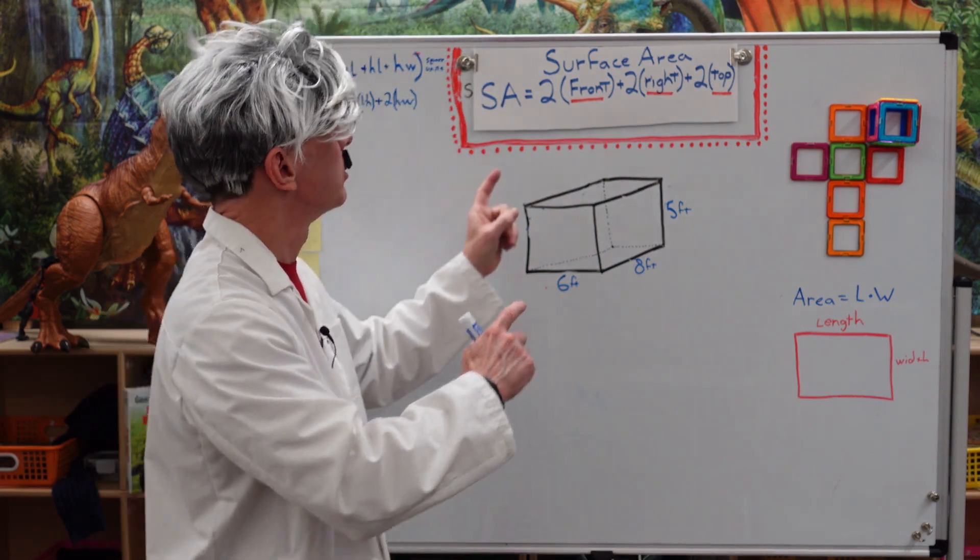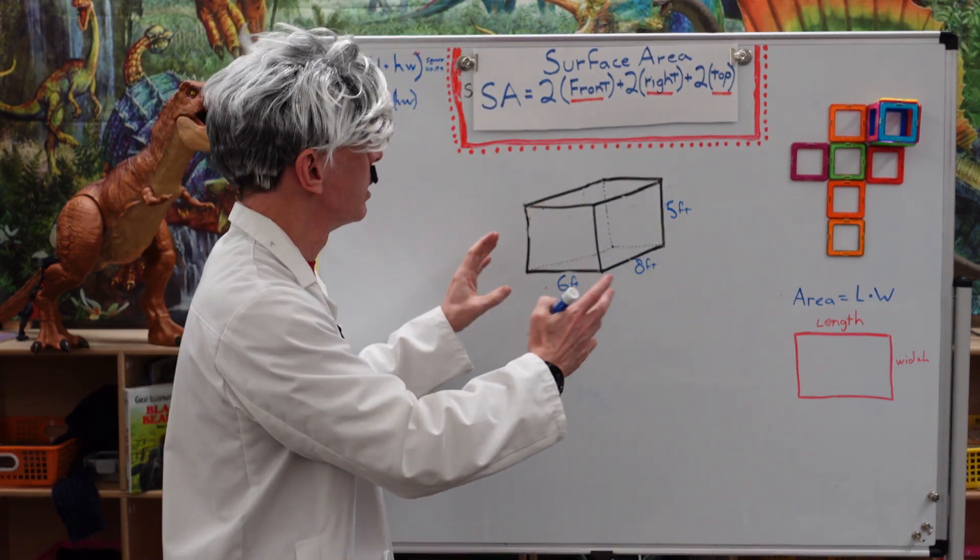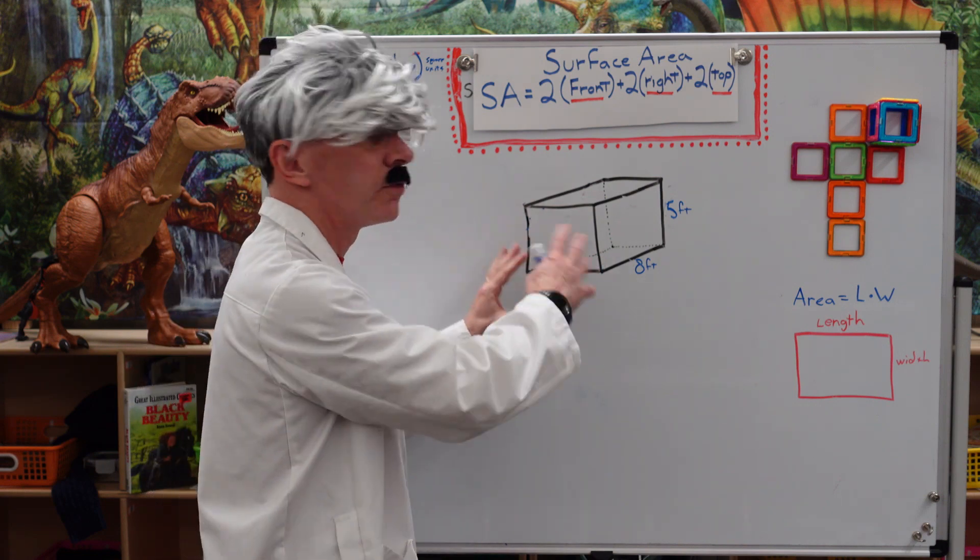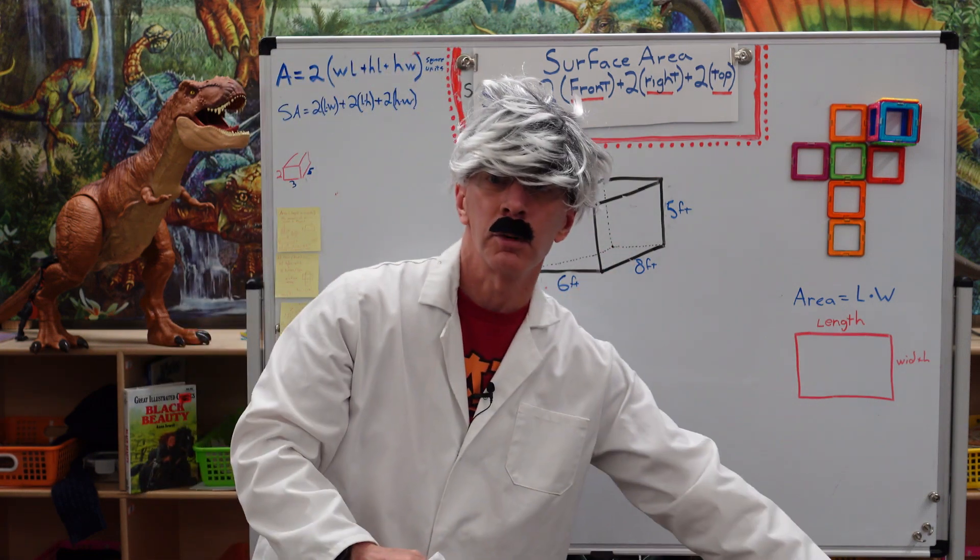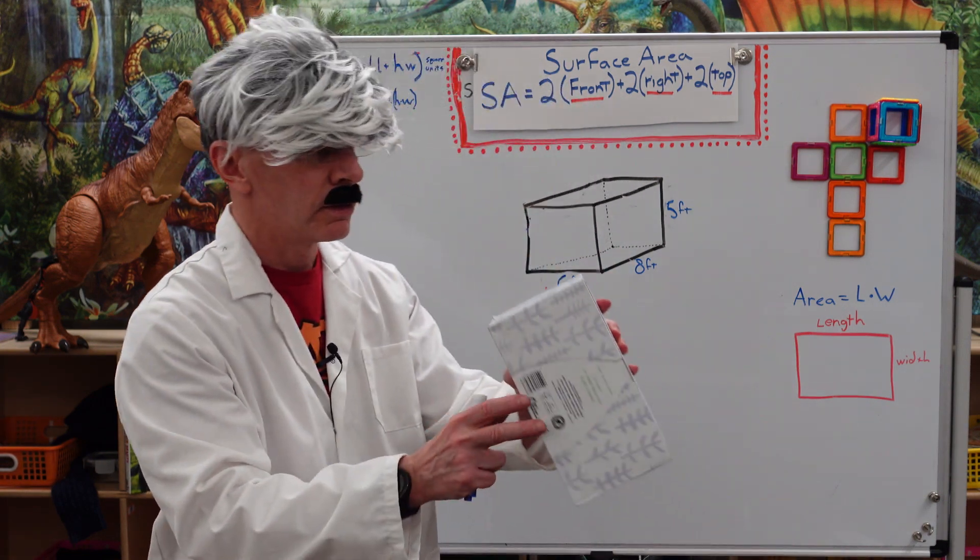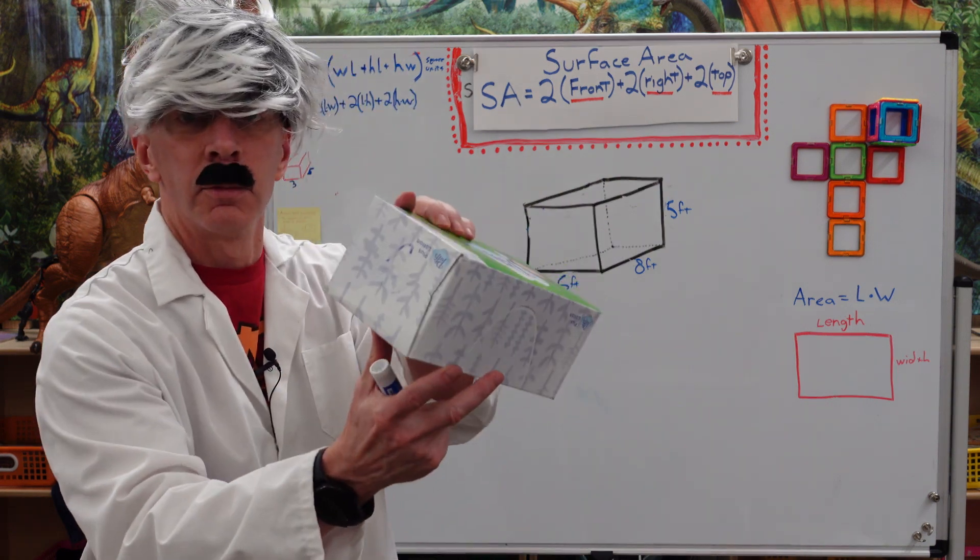Okay, back to the math show. Now we need to find the surface area of the rectangular prism. This right here is a rectangular prism.